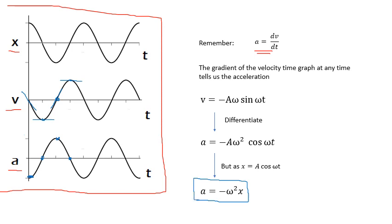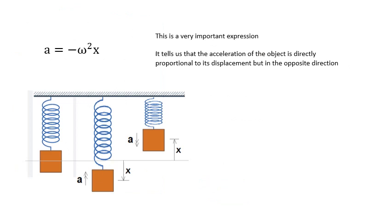a equals minus ω²x. It's a very important expression. And what does it tell us? Well, ω is a constant. Remember that ω is a constant. So, it tells us that a is proportional to x, but in the opposite direction. That's what the minus says. Acceleration is proportional to displacement, but in the opposite direction.